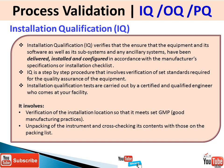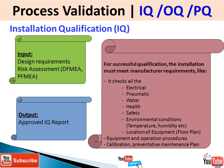IQ has to meet certain GMP requirements — good manufacturing practices — and involves checking the packing of the instrument and cross-checking its content against the packing list. The inputs include design requirements such as DFMEA (design failure mode and effect analysis) and PFMEA (process failure mode and effect analysis). The output is an approved IQ report. During IQ, we check all electrical and pneumatic connections, water requirements, health and safety conditions, environmental conditions like temperature and humidity, equipment location, floor plan, operating procedures, calibrations, and preventive maintenance plans.